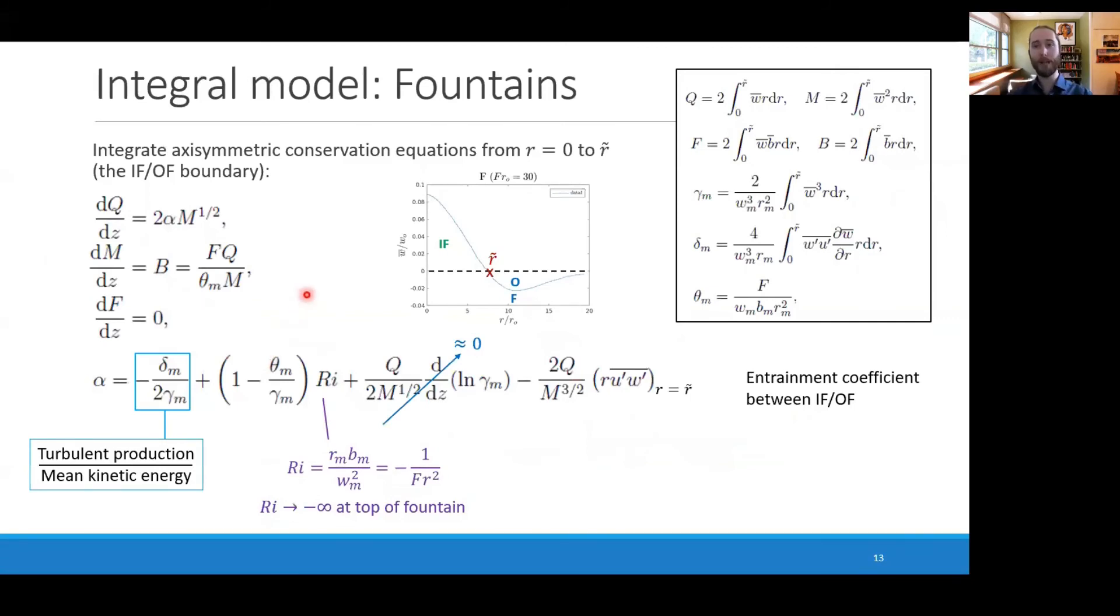We can apply a similar analysis to the fully developed fountain, except we instead integrate the conservation equations from zero to the inner flow outer flow boundary, which is the point where the velocity profile goes to zero. This results in an almost identical set of equations, except in the entrainment expression, we now have this extra term here. This is a boundary condition between the inner flow and the outer flow, reflecting the fact that the shear stress does not go to zero at this point, but we can measure it with the experimental data.